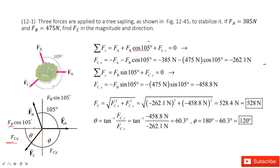Now we look at the y-component. We have Fb sine 105 degrees plus Fcy, and we add them together, keeping the sign inside each component. After calculating, you find that both Fcx and Fcy have negative signs, which means the result is positive. So Fcx is there and Fcy is there. Now you can find the magnitude and angle theta for them. Thank you.